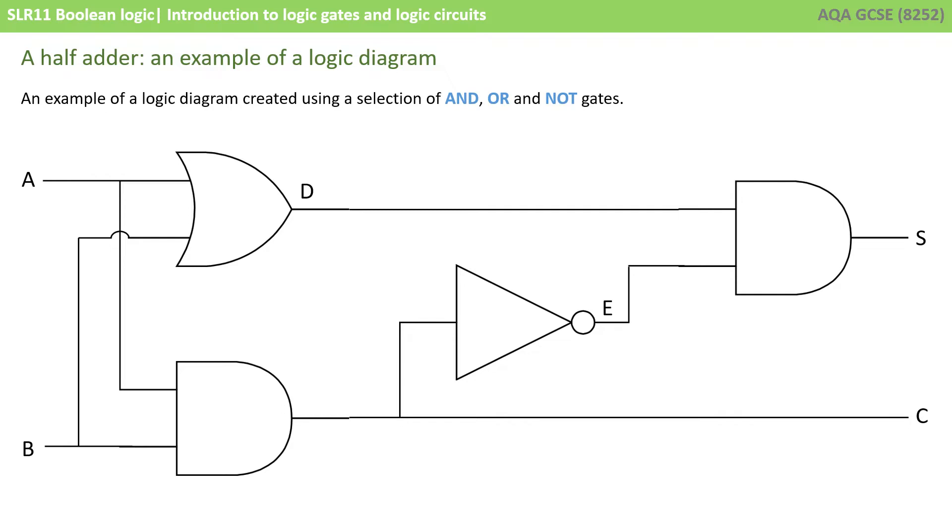Here's an example of a circuit that can add binary numbers together. Now this is more complex than the circuits you need to study at GCSE but it illustrates their use. You will notice the circuit is built using three types of components or boolean operations. We sometimes call these gates or logic gates.